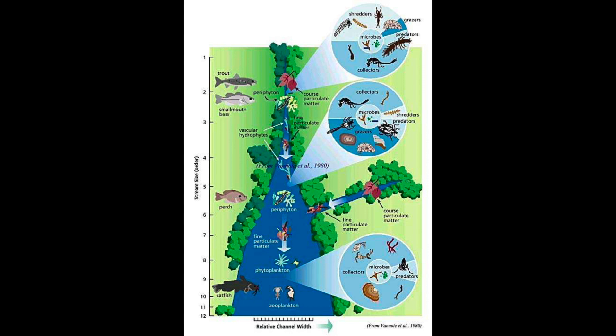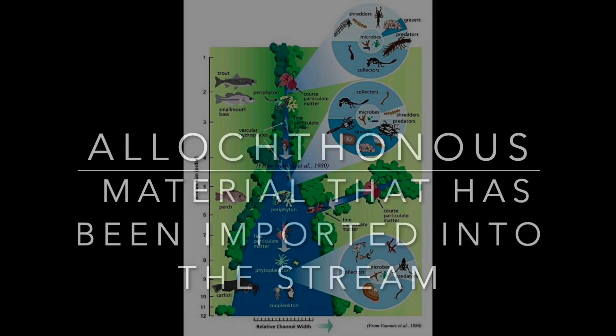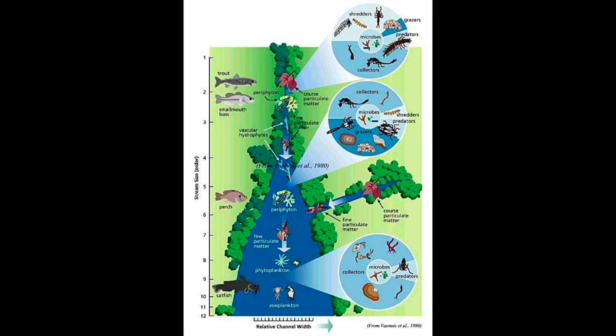This is caused by differences in food resources along the stream. Since there are a lot of allochthonous inputs in headwater streams, there are also more macroinvertebrate species in a guild known as shredders, and as their name suggests, shredders shred plant material.